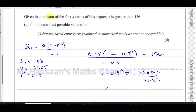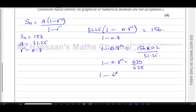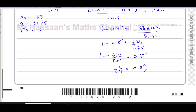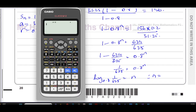That gives 1 minus 0.8 to the power of n equals 624 over 625. So 0.8 to the power of n equals 1 minus 624 over 625, which is 1 over 625. Taking log to the base 0.8 of both sides: n equals log base 0.8 of (1 over 625).